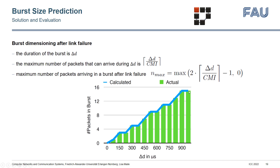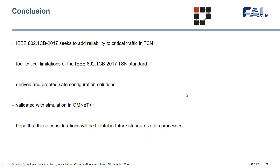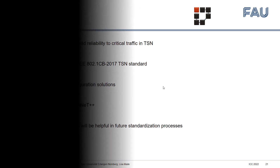To sum it up, IEEE 802.1CB seeks to add reliability to critical traffic in TSN, but it can only do so if its configuration is correct. We have highlighted and presented four critical limitations of this standard, and for these we have derived safe configurations. We have proved them theoretically and validated them in simulation using OMNeT++.